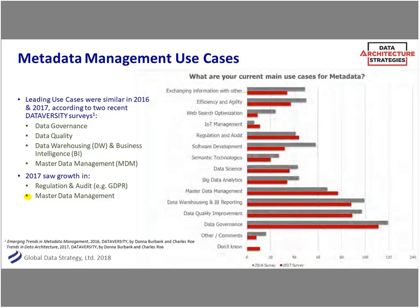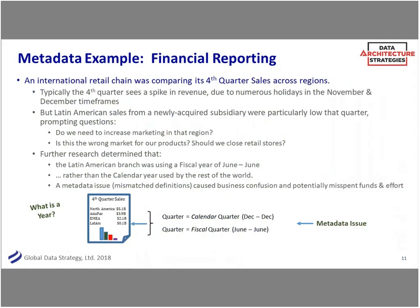Here's a real-world example. An international retail chain was trying to compare its fourth-quarter sales. In North America there's typically a spike in sales around November and December. But they had just acquired a subsidiary in Latin America and their sales were particularly low around that period. They wondered: do we need to increase marketing, is this the wrong market? Then they discovered that Latin America was using a fiscal year of June to June, while everyone else was using a calendar year. Something as simple as what do we mean by a 'year' or a 'quarter' made all the difference.